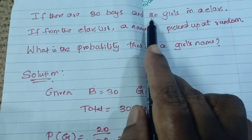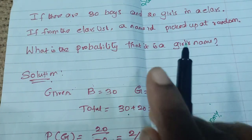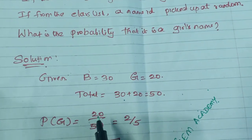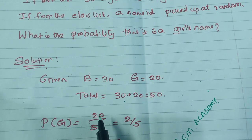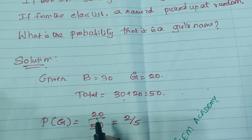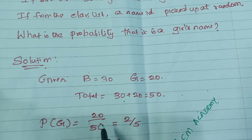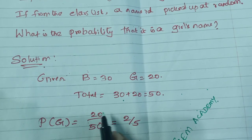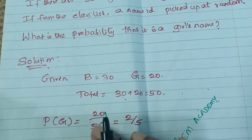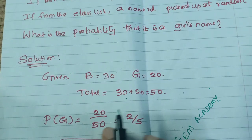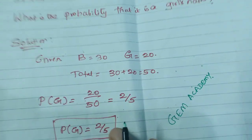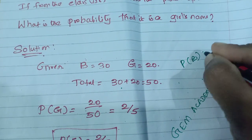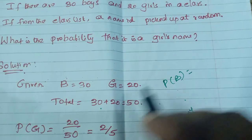There are 20 girls. Out of them, we need to pick only one. Total number of students is 50, of which the number of girls is 20. So the probability of choosing one girl is 20 divided by 50. Out of 50 students, 20 are girls, so we need to pick one girl. Probability for girls = 20/50 = 2/5.